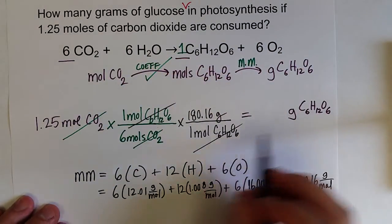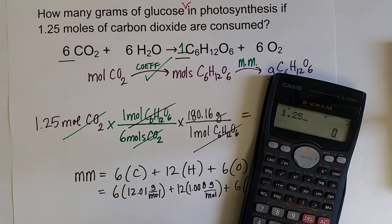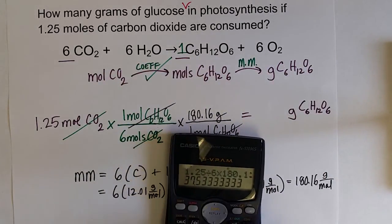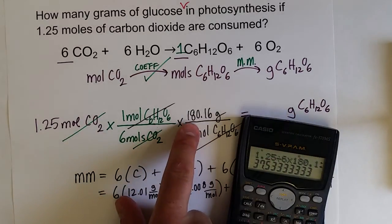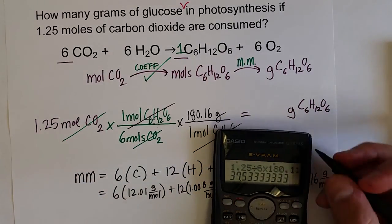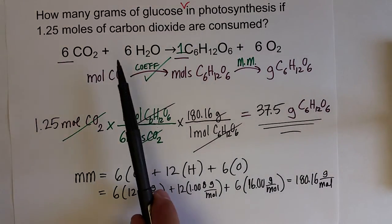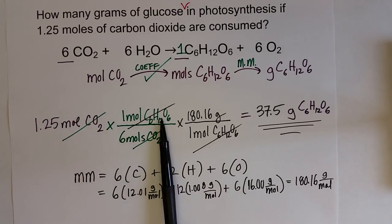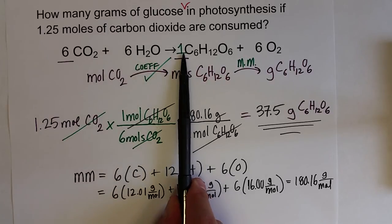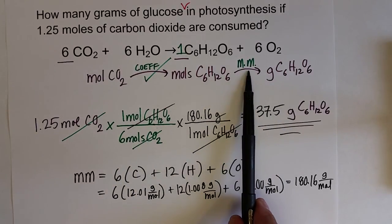Moles cancel out and I've got the units for my final answer. So: 1.25 divided by 6 times 180.16 gives 37.5 grams. Coefficients are exact numbers, so significant figures come from 1.25 — three significant figures — giving 37.5 grams of glucose. We used the coefficients to convert between CO2 and glucose, and then converted from moles to grams using the molar mass, just as we've done previously.